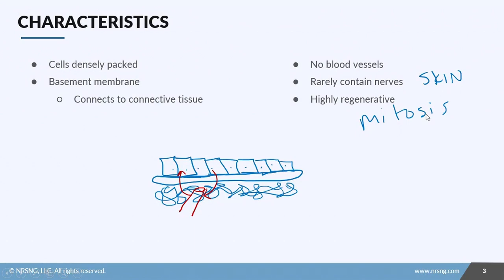A couple more quick terms you need to know with epithelial tissue: they have what's called a basal surface. The basal surface rests against the basement membrane. And then they also have what is called a free surface. A free surface means it doesn't come into contact with any other tissue, so think about the outside of our skin or the inside of our mouth.